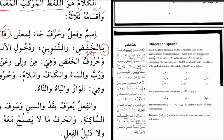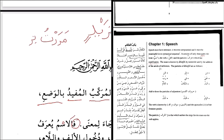Nominative, accusative, genitive — rafa', nasb, jar, or jazm in Arabic — it's only going to be between nouns and verbs. It's mostly nouns that we find in these positions, and sometimes verbs. The genitive case is particular to nouns, which is why it's an identifier for a noun. For example: 'Marartu bi-Zaid' — I passed by Zaid.